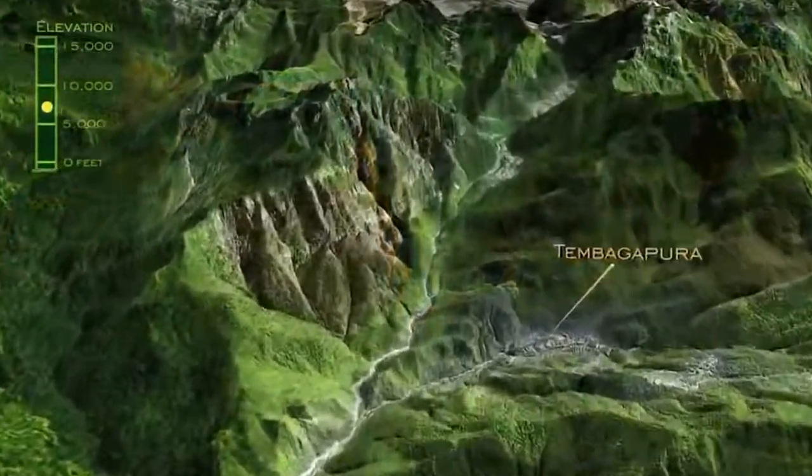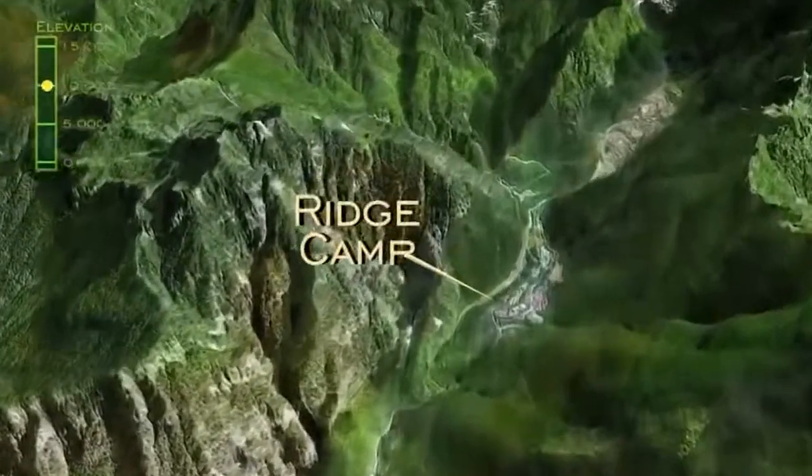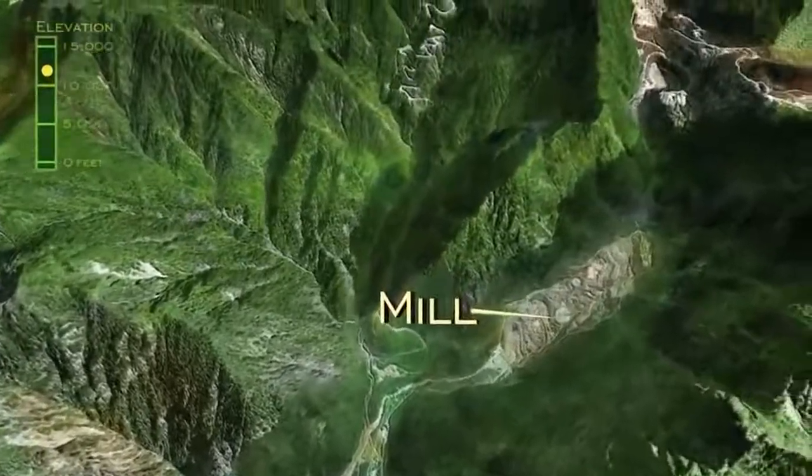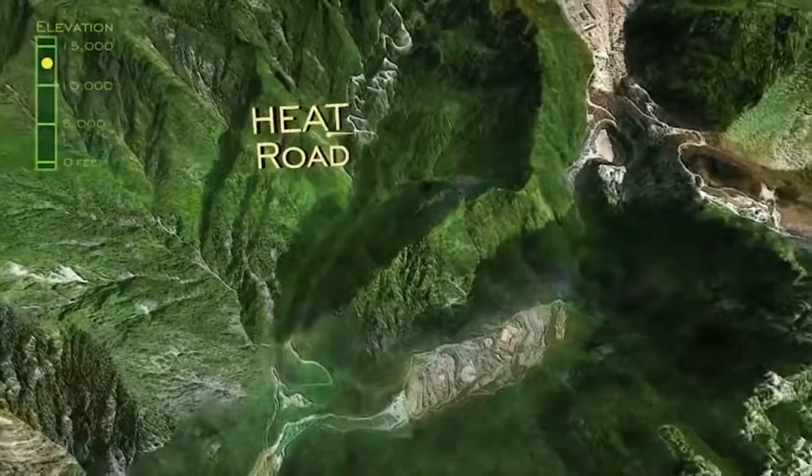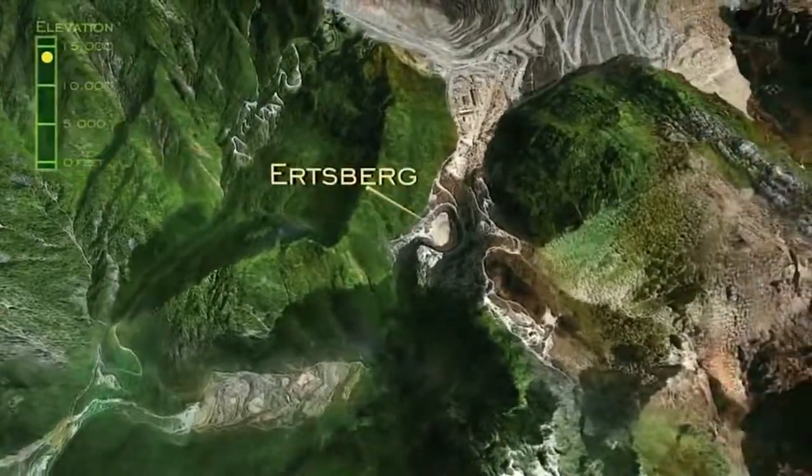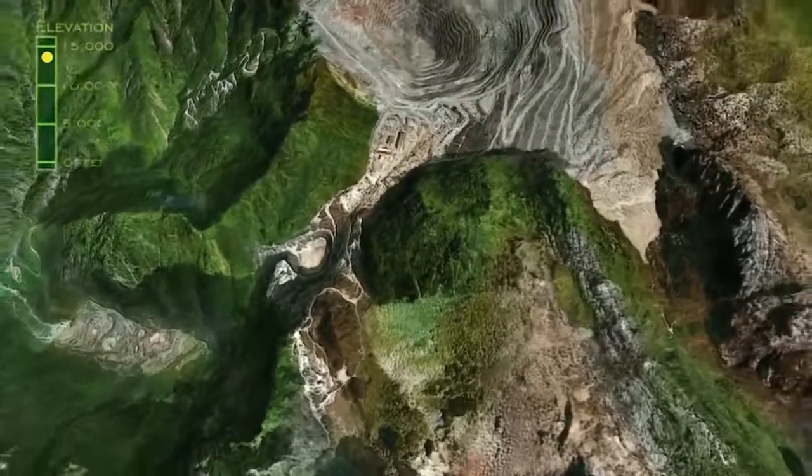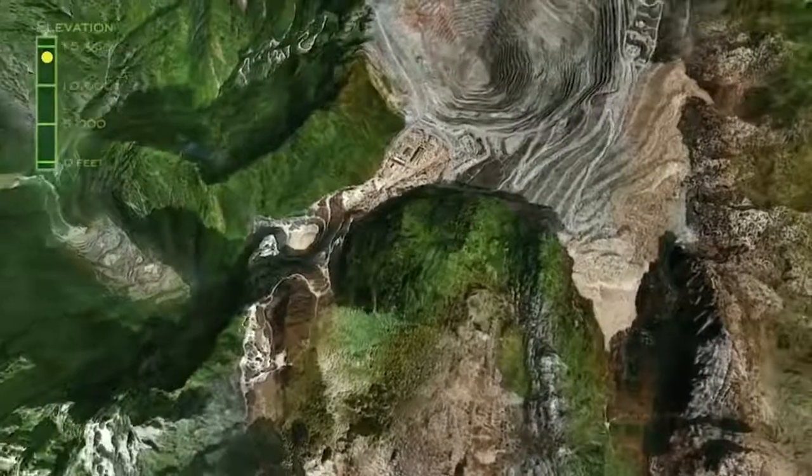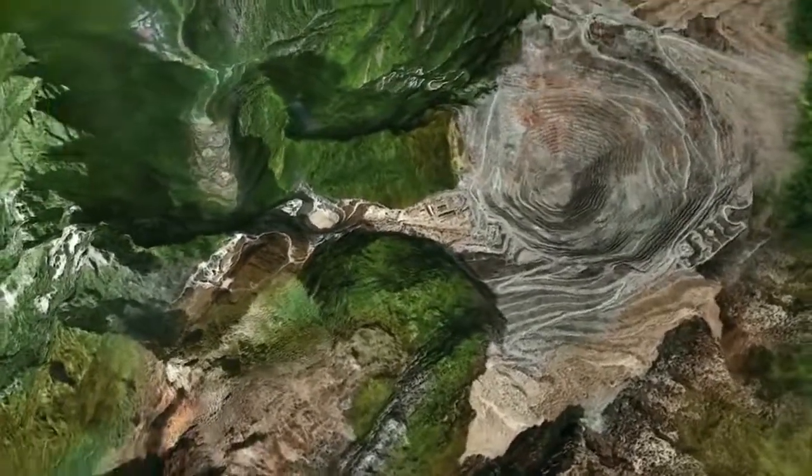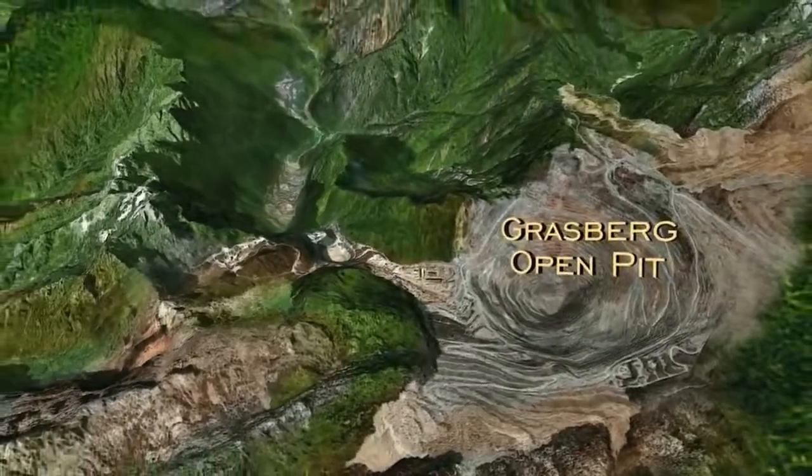The primary PTFI town site, Tembagapura, ridge camp where thousands of workers are housed, the mill, the heavy equipment access trail or heat, the original Ertzberg open pit mine, and some 80 miles from the coast, the Grasberg open pit, 14,000 feet above sea level.